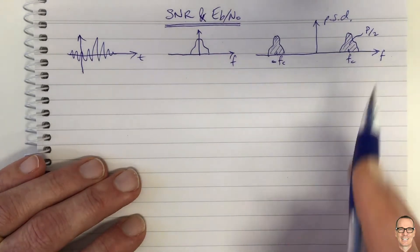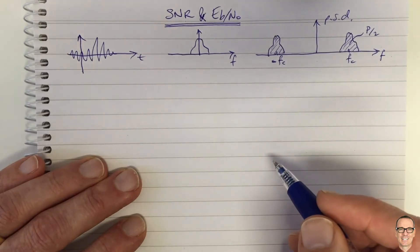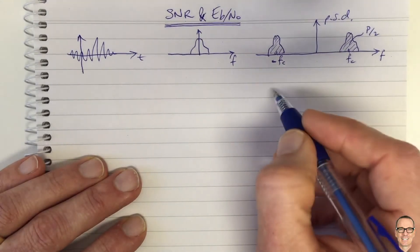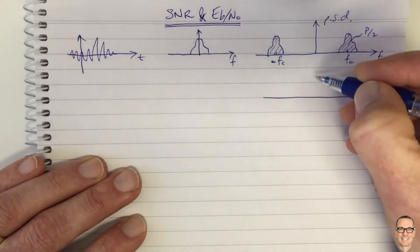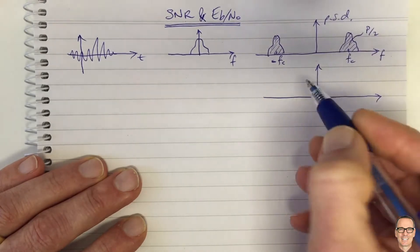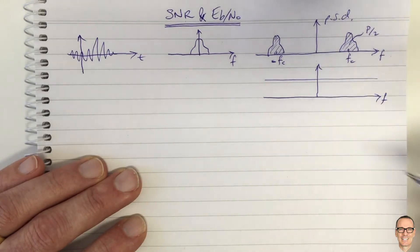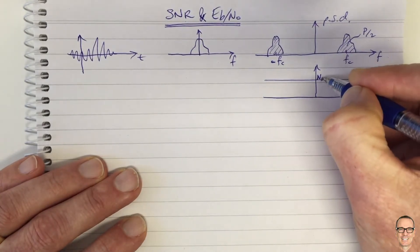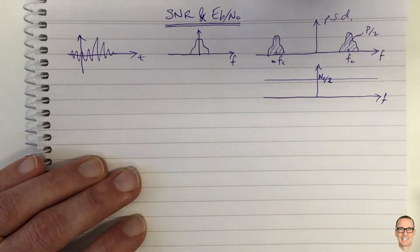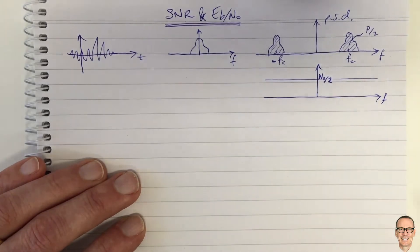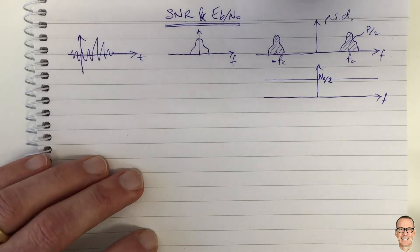Now let's think about the noise. We're going to transmit this over a channel and consider white noise — independent noise samples whose spectrum is flat. This is a flat noise spectrum: the power spectral density of noise, and because it's two-sided we label it N0 divided by 2. It's a flat power spectral density with all frequencies equally represented in the noise.